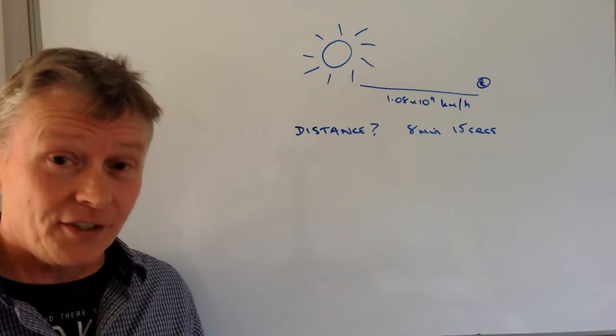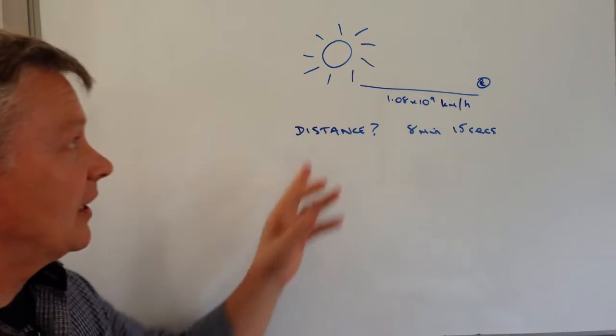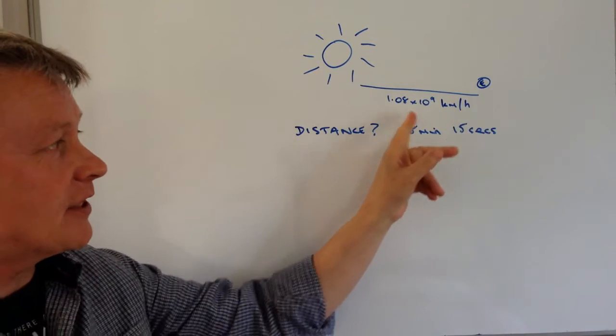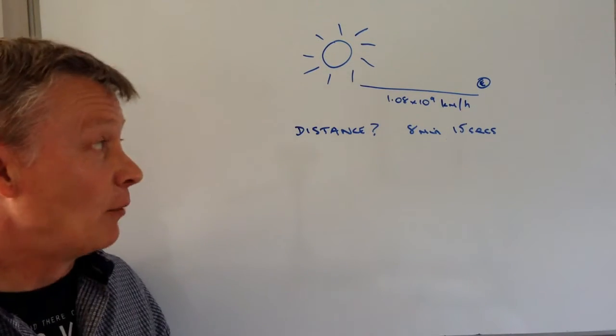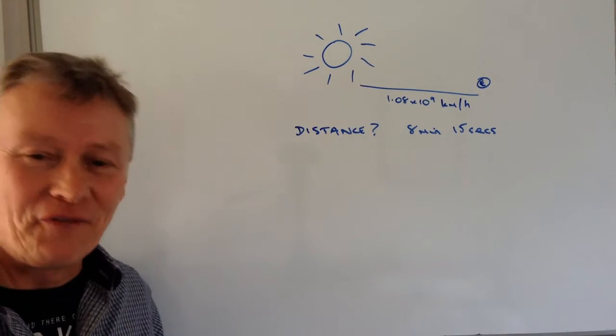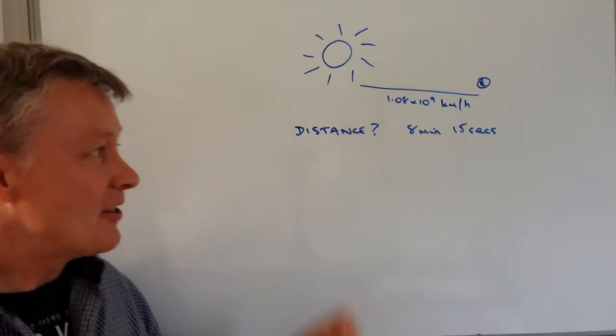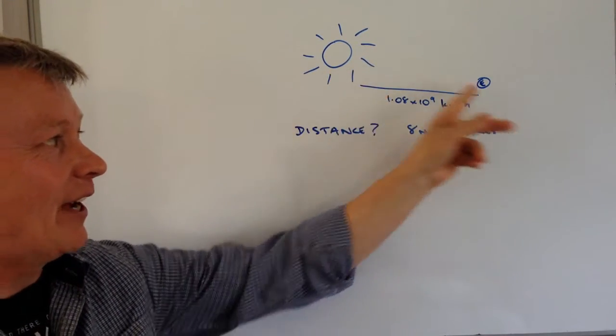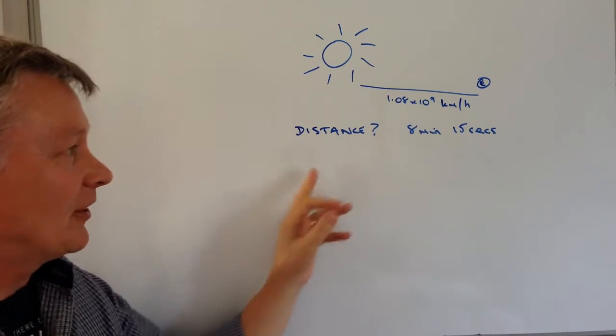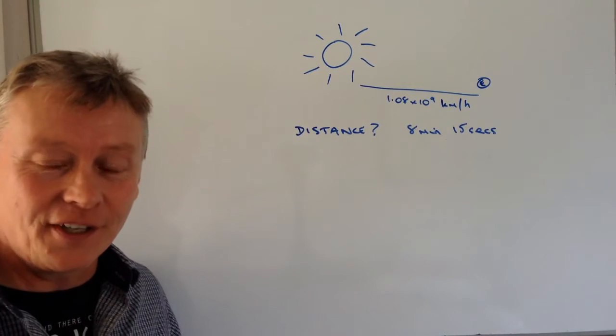I will write the full problem in the description below, but essentially we've got the Sun and the Earth, and it tells us the speed of light is 1.08 times 10 to the power of 9 kilometres per hour. It also takes 8 minutes and 15 seconds for light to travel from there to there.